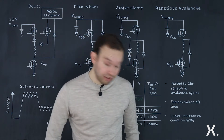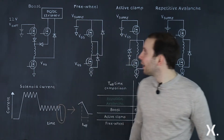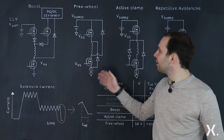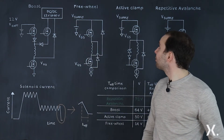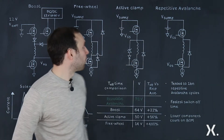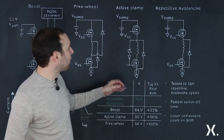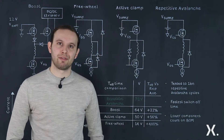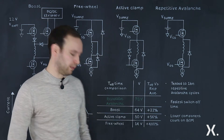The four examples that we're going to look at are the boost circuit and the freewheel diode circuit, along with active clamp and repetitive avalanche designs.